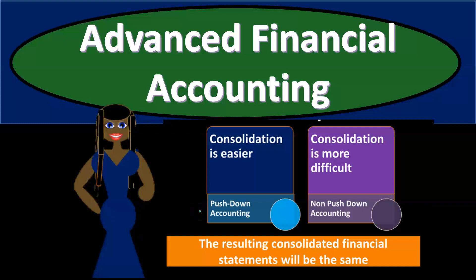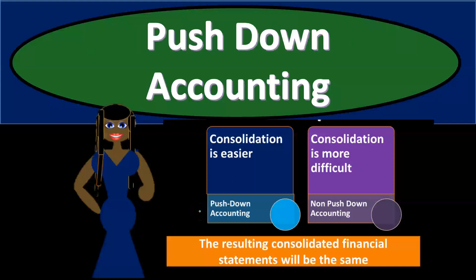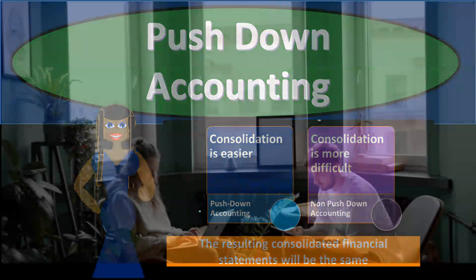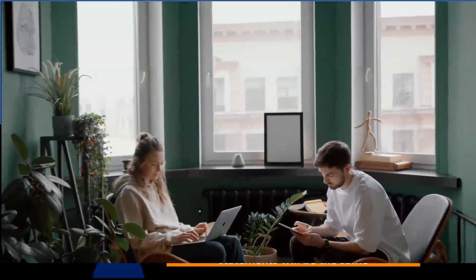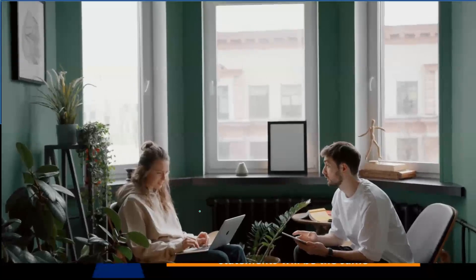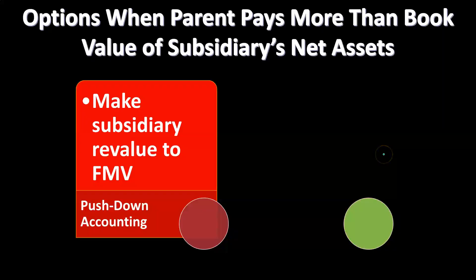In this presentation on advanced financial accounting, we will discuss push down accounting as it relates to parent-subsidiary relationships. When we have a controlling interest over 51 percent and consolidation accounting is taking place, we will be applying push down accounting to it.